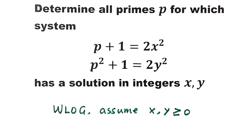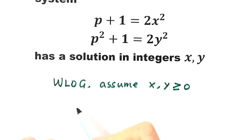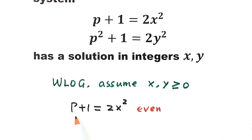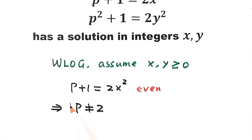Let's see what information we get from the two equations. Looking at the first equation: p plus 1 equals 2x squared. The right-hand side is even, so the left-hand side must also be even. So p plus 1 is even, which means p cannot be even — so p cannot be 2. Therefore p must be a prime number greater than 2.